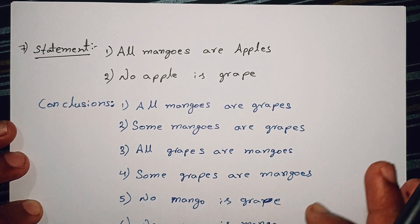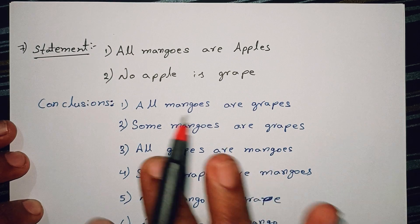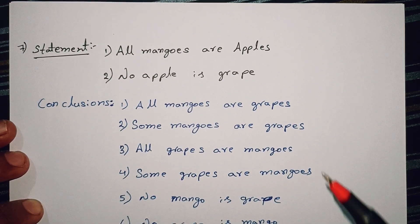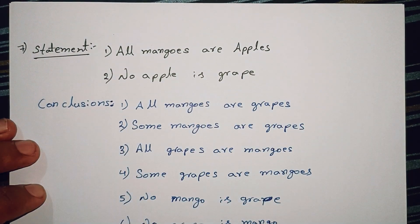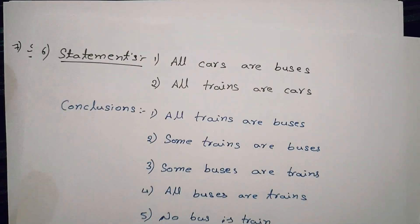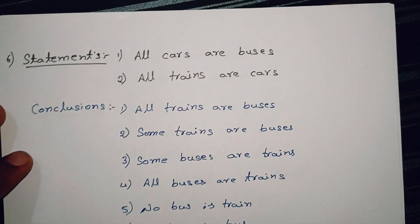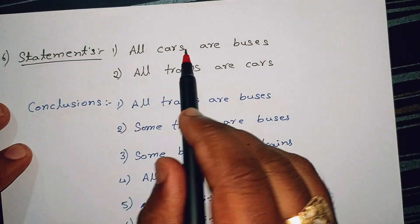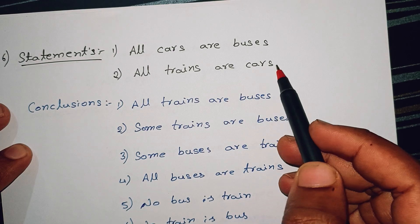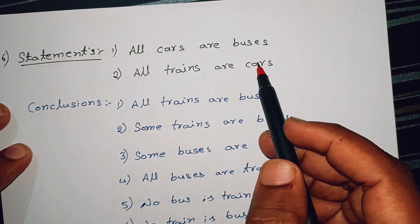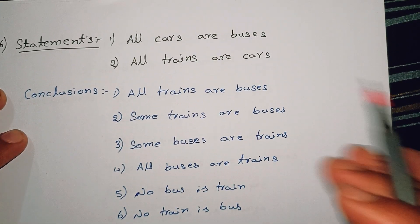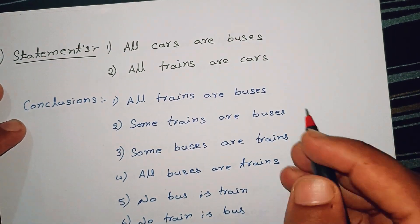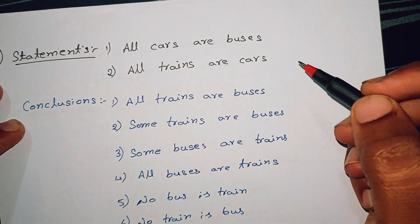If you are interested in starting the first video, it will explain clearly. So friends, we will get the second question. In the second video, we will get the homework question. First, the statement is that all cars are buses, all trains are cars. This is two statements. If you are interested in starting the second sentence, you will get the next two statements and conclusions.